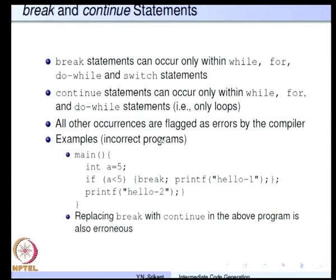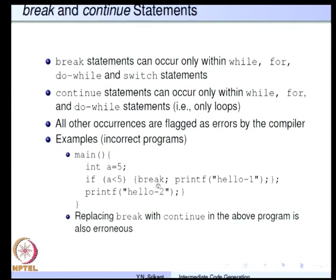Let us look at a couple of incorrect and correct programs with break and continue to understand how to generate code for these statements. Here is an incorrect program: int a equal to 5, if a less than 5 then break, printf hello 1, and outside is printf hello 2 — this would be flagged as an error by the compiler. Similarly, replacing this break with a continue will also be flagged as an error; it is not as if the then part is skipped and it goes and prints hello 2.